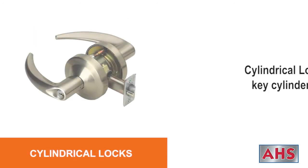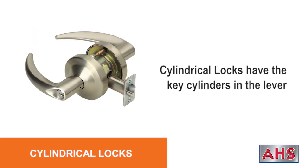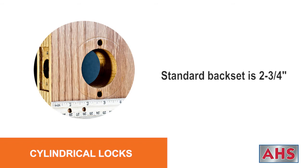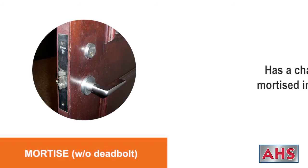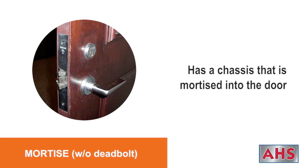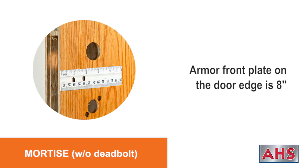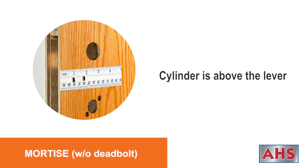Cylindrical locks have the key cylinders in the lever. The standard backset is two and three-quarter inch. A mortise lock without deadbolt has a chassis that is mortised into the door. A common backset is two and three-quarter inches, the armor front plate on the door edge is eight inches, and the cylinder is above the lever.